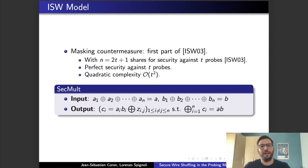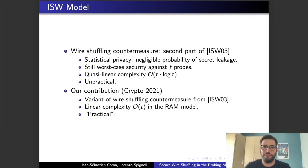They achieved perfect security against T-probes with a number of shares equal to 2T plus 1. The only disadvantage of it is the cost, which is quadratic in the number of shares and in turn in the number of probes. In fact, in order to improve such complexity, they relaxed a bit the privacy notion, allowing now the adversary to recover some secret leakage with some non-zero and very small or negligible probability.